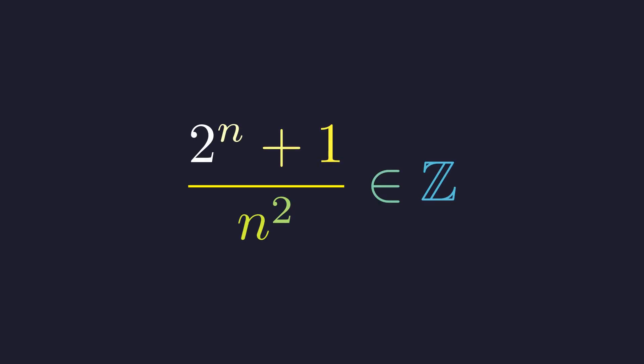We're looking for all integers n that make this expression, 2 to the power of n plus 1 all divided by n squared, also an integer. This seemingly simple problem will take us on a journey through the elegant world of number theory. Like any good detective, we'll start by examining the scene. Let's test a few small numbers and look for clues.